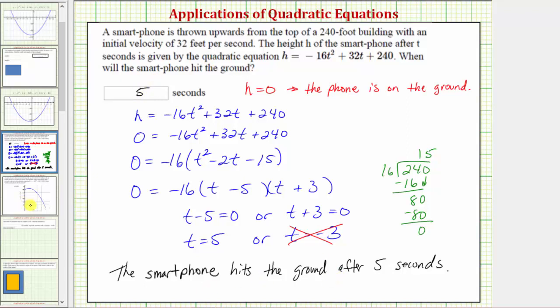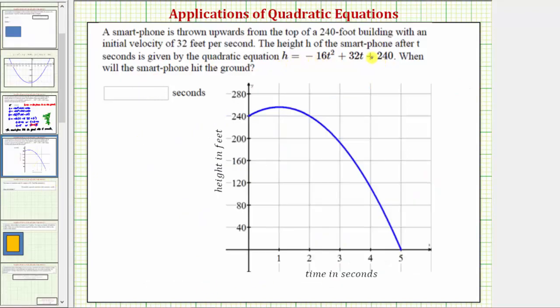Now check our work graphically. Here's the graph of the given function over the domain, which is the closed interval from zero to five. We know time can never be negative. So time starts at t equals zero. And after 5 seconds, we can see that the phone hits the ground.